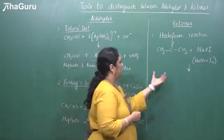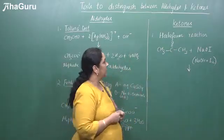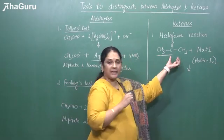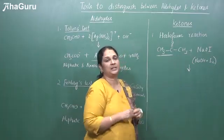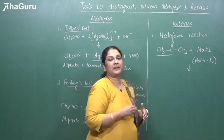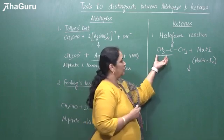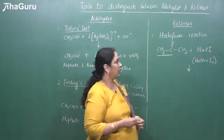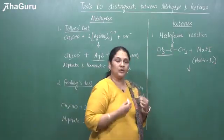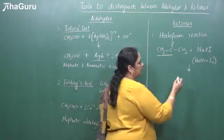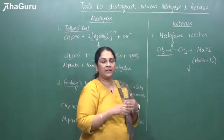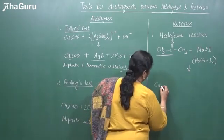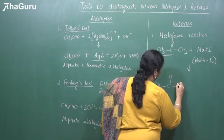Next we will see the test for ketones. The important reaction is the haloform reaction. Here we take the ketone, and a very important condition is that it should be a methyl ketone — there should be a methyl group attached to one side of the carbonyl group, otherwise it will not give the test. The important part is the CH₃CO group. To this we add sodium hypohalite, that is sodium hydroxide plus I₂ (you can also take Cl₂ or Br₂). This forms sodium hypoiodide, and when you treat with this reagent the compound gets oxidized to CH₃COONa.